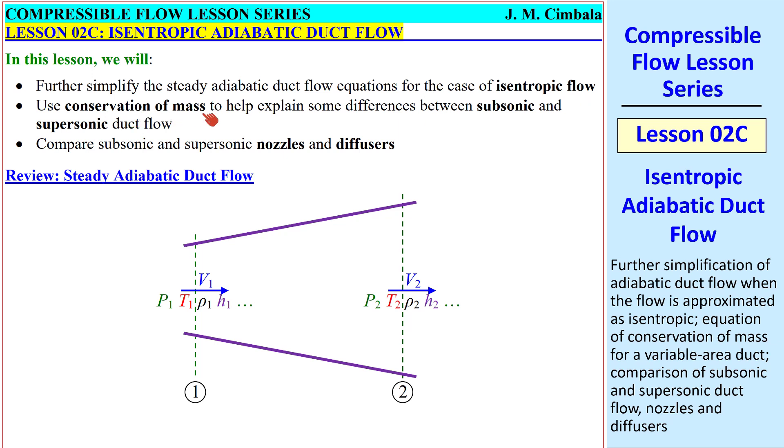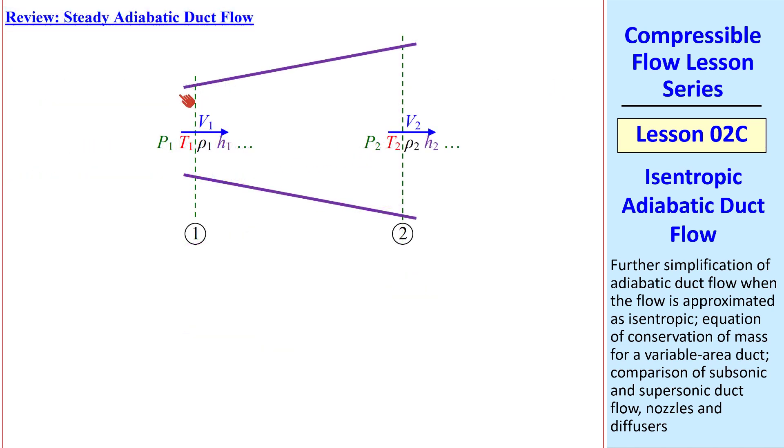Then we'll use conservation of mass to help explain some differences between subsonic and supersonic duct flow. Finally, we'll compare subsonic and supersonic nozzles and diffusers. We begin with steady adiabatic duct flow in a variable area duct, such as this expansion.